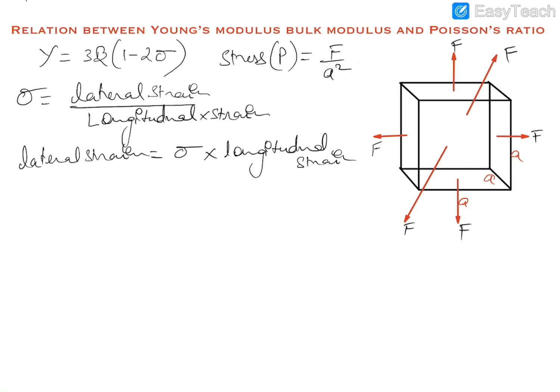Now we can see that longitudinal strain delta L by L is equal to stress P upon Young's modulus. If we take the x-axis as the longitudinal direction along the length and apply a force F on the area A squared, then F upon A squared is P — the stress — and Young's modulus is gamma. So the change in length upon original length in this direction is stress upon Young's modulus.